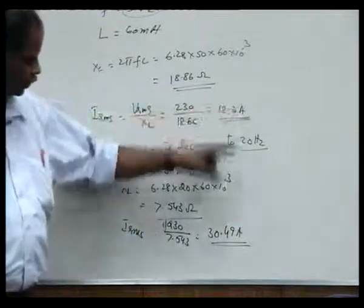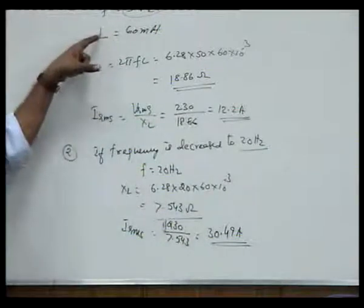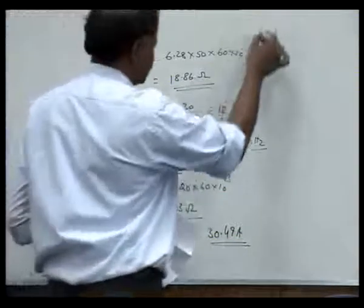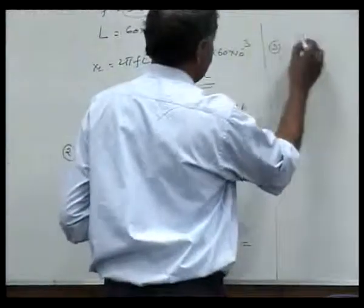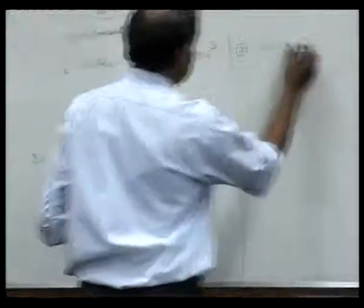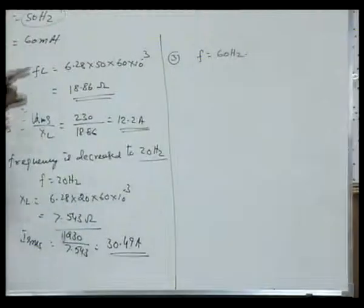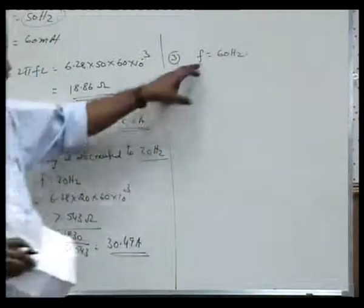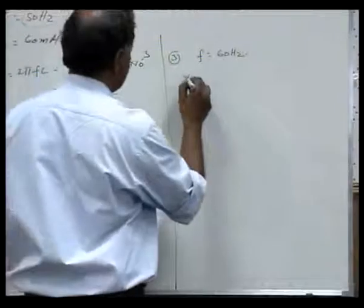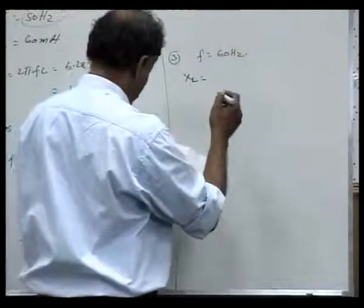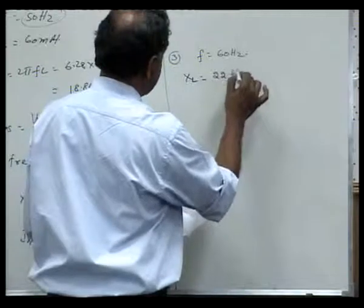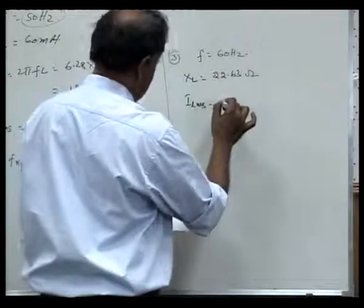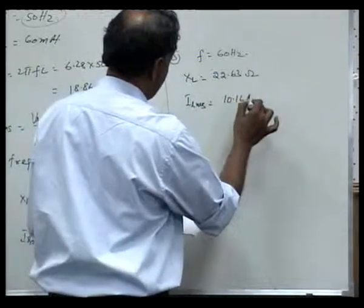Earlier the current was only 12.2 amperes and now it is 30.4 amperes. Therefore when frequency decreases in an AC circuit containing an inductor, the amount of current will increase because the reactance decreases. The third case is when frequency is increased to 60 hertz — in this case the reactance value will increase because it is directly proportional, giving XL = 22.63 ohms and therefore the current will be 10.16 amperes.